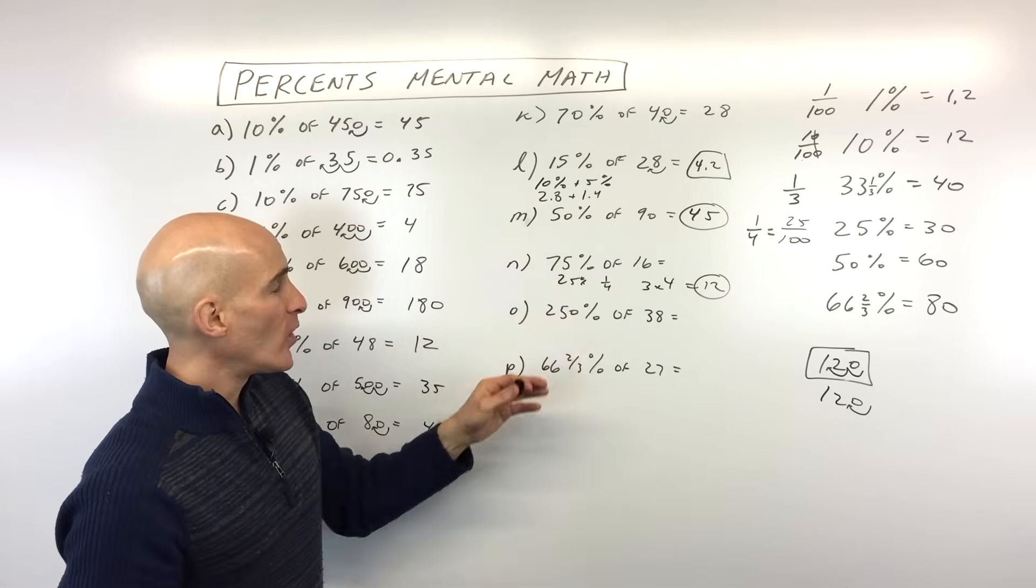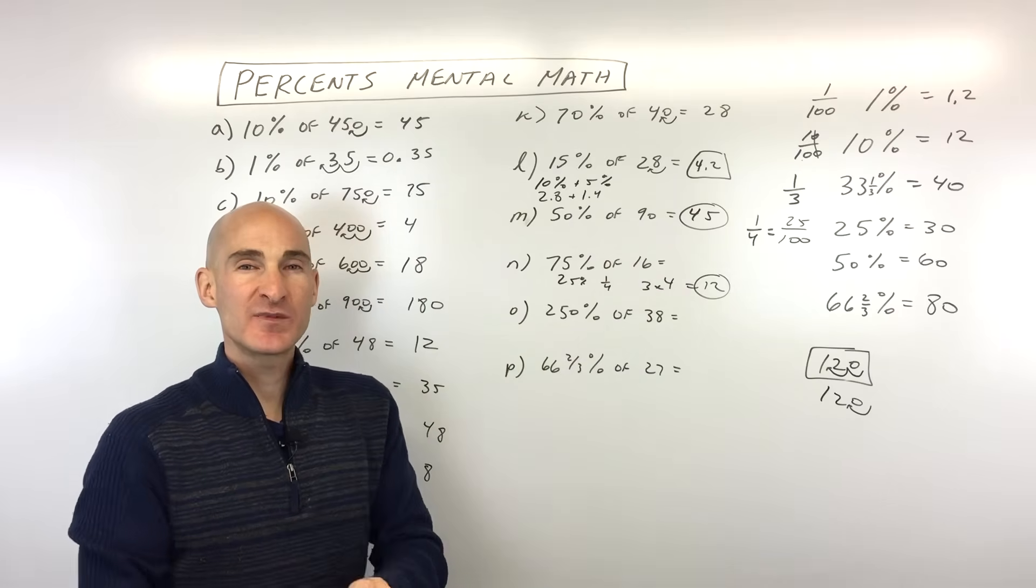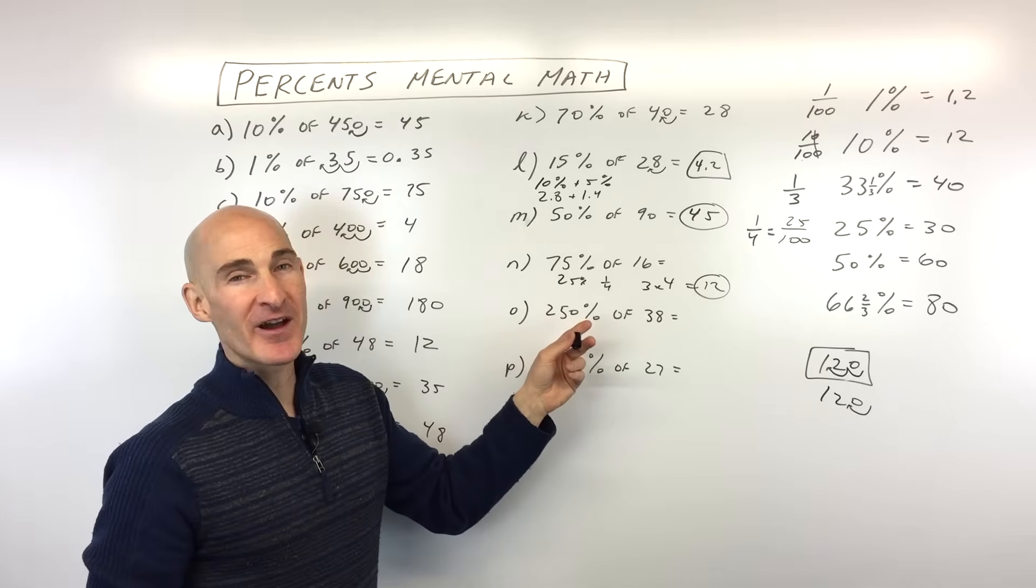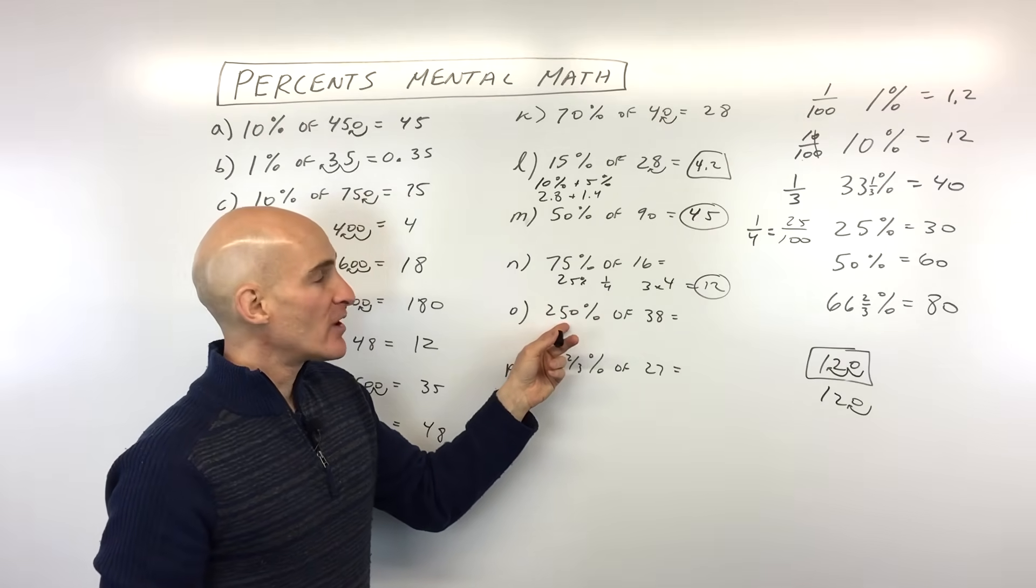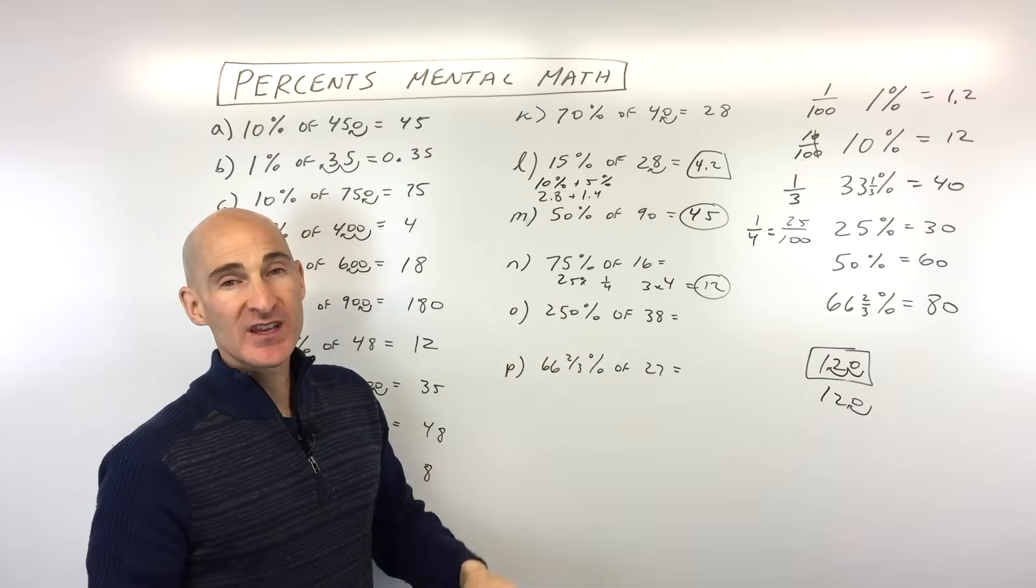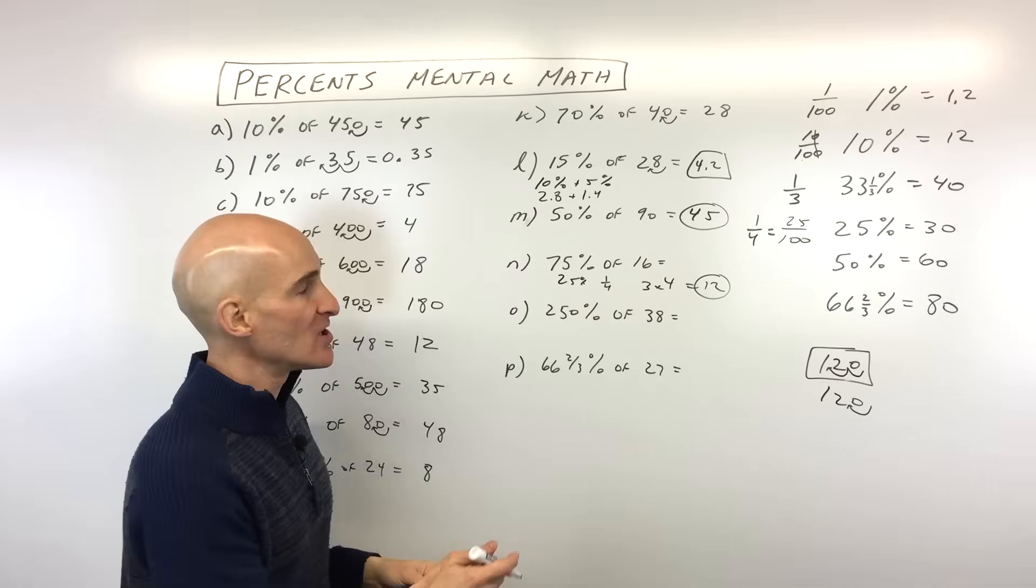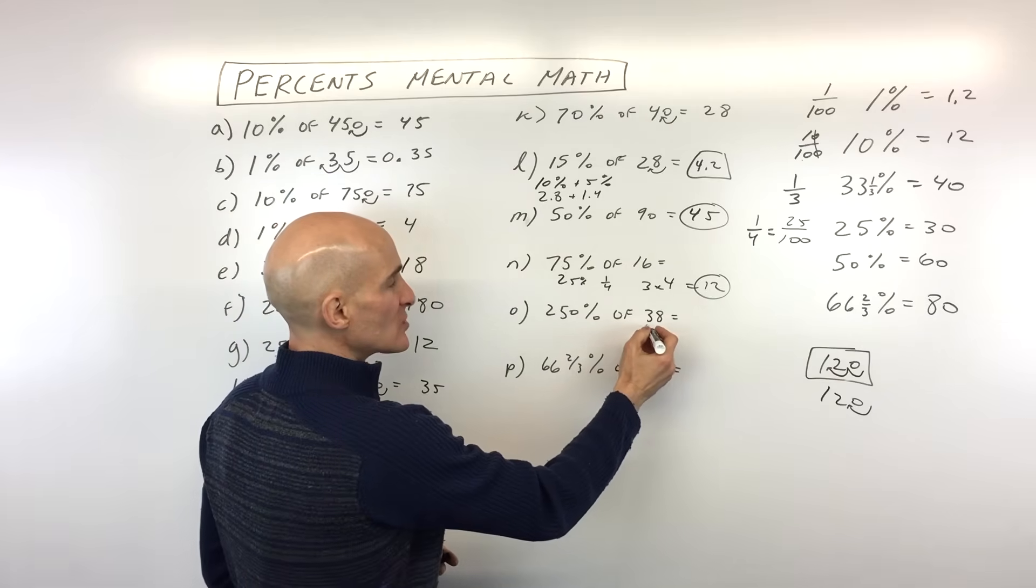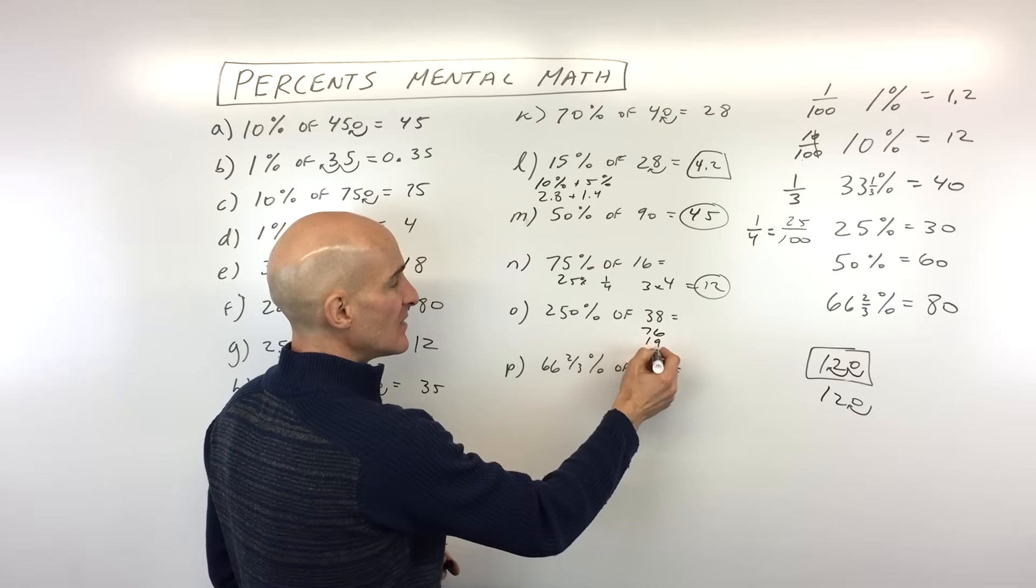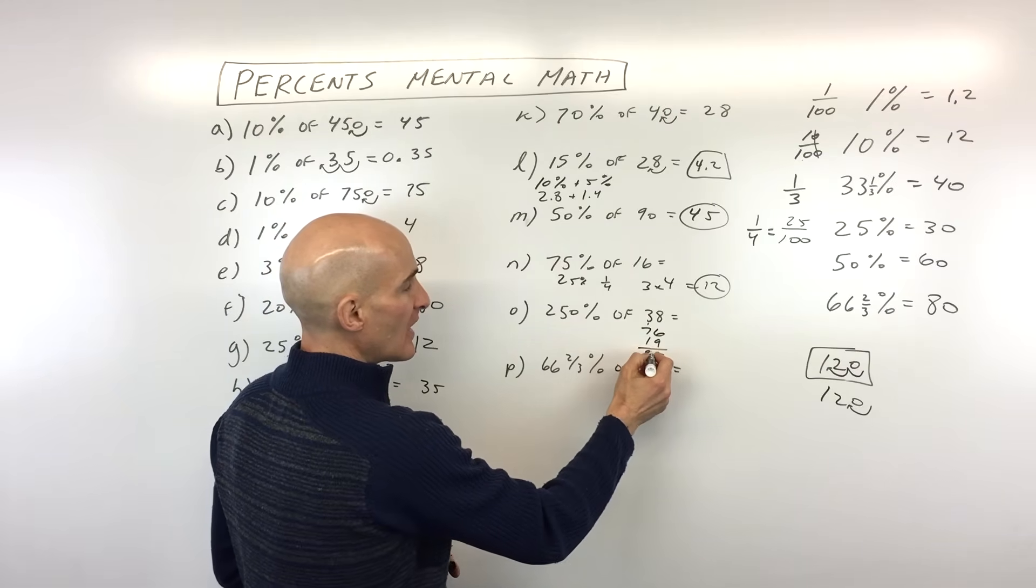250%. Now, this is a more challenging one. See, 100% really means the whole thing, right? If somebody says, I'm going to give you 100% of my sandwich, that's the whole thing, right? But 200% would be like two times as much. 250%, 50% is like half. So we're really talking about two and a half times as much. So let's do two times as much. Two times 38 is 76. Half of 38 is 19. If we add those together, what do we get? 5, 1. We're looking at 95.